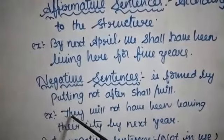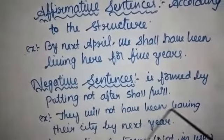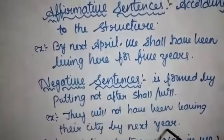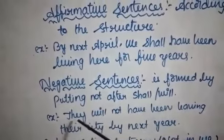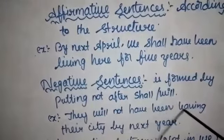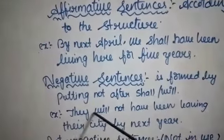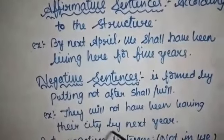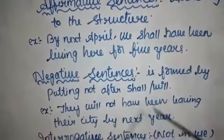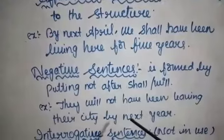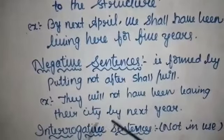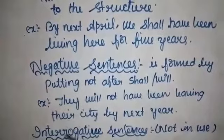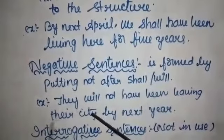Example of a negative sentence: 'They will not have been leaving their city by next year.' In interrogative sentences, the helping verb comes at the beginning of the sentence followed by the subject.